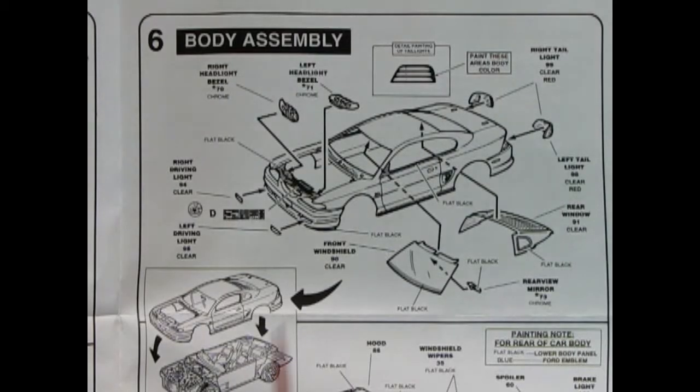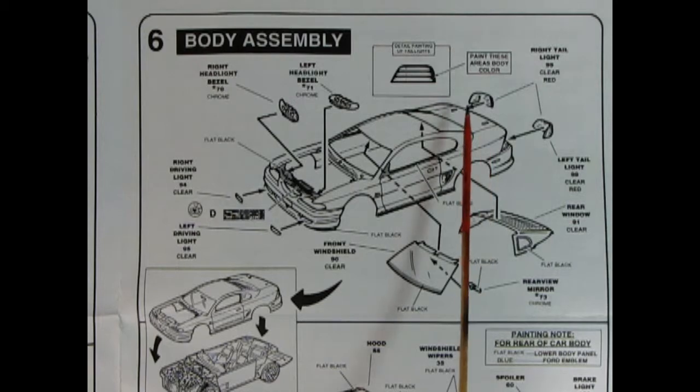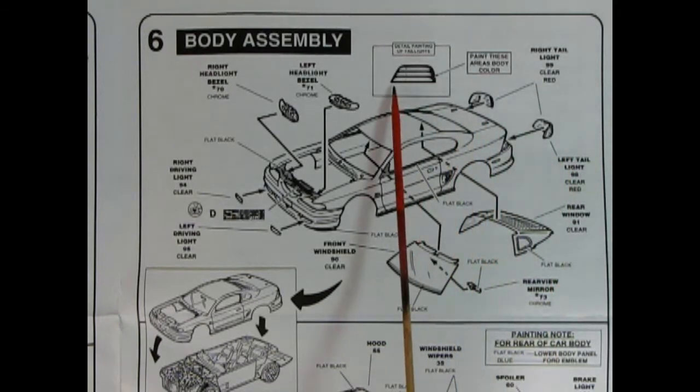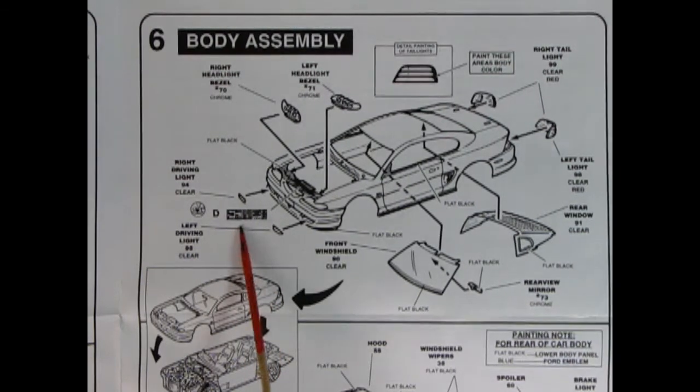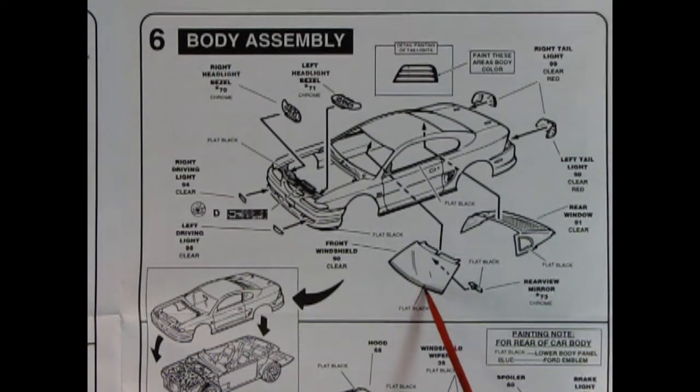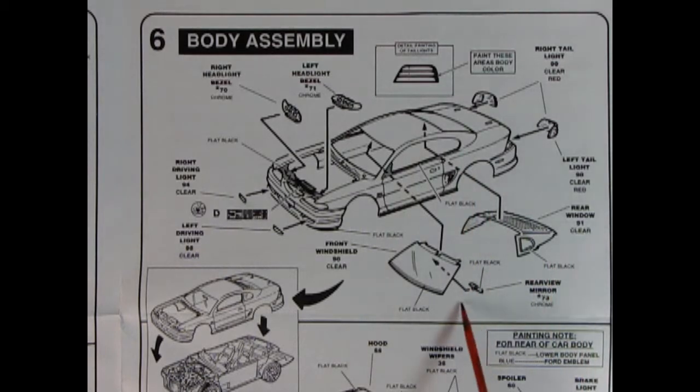Panel six shows our body assembly with the main body right here. Then we've got our tail lights going in the back and this shows you how to paint them. We also have our front headlight bezels being put in place and then the clear parking lights, driving lights go in there.